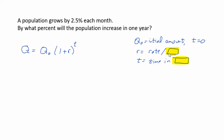So if your rate is per month, then this t time is going to be in months. If your rate is per year, then your time is going to be in years. And Q is the amount after time t.